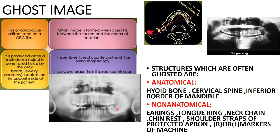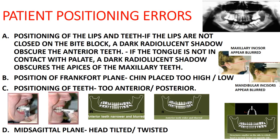The ghost image resembles its real counterpart with the same morphology but always appears larger than the actual object. Structures that are often ghosted include anatomical structures — hyoid bone, cervical spine, inferior border of mandible — and non-anatomical objects such as earrings, tongue rings, neck chains, chin rests, shoulder straps of the protective apron, and right/left markers of the machine.